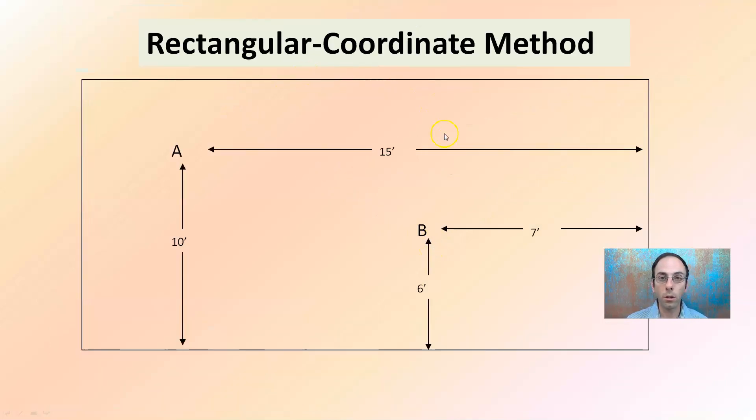So the rectangular coordinate method, where we see here, nice kind of coordinating things where object A and B might be located. It's another great way at right angles from the wall and distance from the wall.